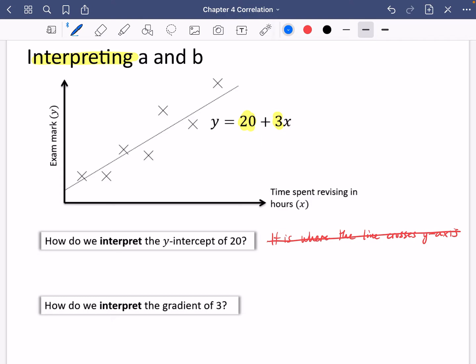So let's think about what it's talking about. The time spent revising in hours x. Well, if it's telling me that it's crossing here at 20, this tells me that if someone spent no time revising, we would expect them to get an exam mark of 20. That's a proper interpretation of this.